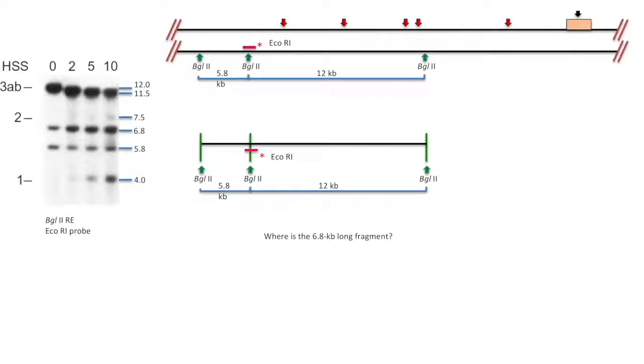Then where is the 6.8 kb long fragment? There must be one more fragment of Bagel 2 that is complementary to the probe somehow else in the chromosome. And because this band is not in the globin gene control region, we can ignore it.